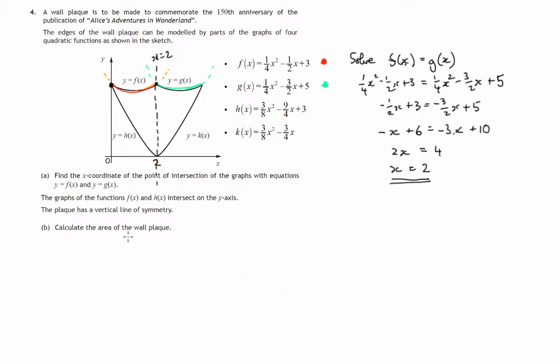And we're asked to calculate the area of the wall plaque. That's the area between these two curves doubled because of the symmetry. Whatever this area is in the left, it will be identical to the mirror image of it on the right of the line x equals 2.